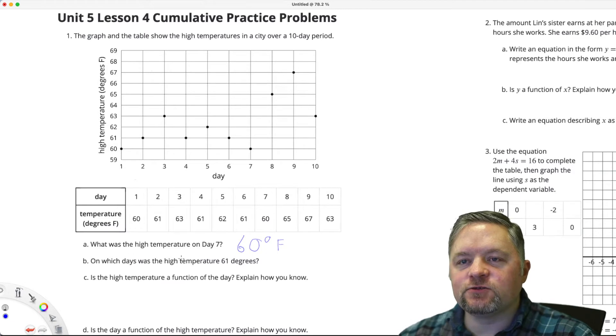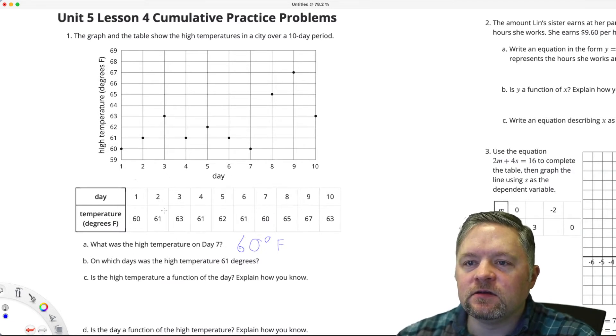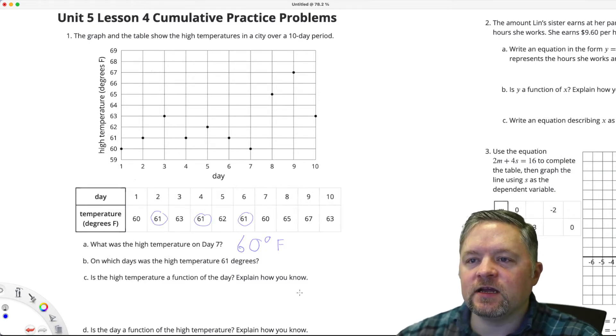On which days was the high temperature 61 degrees? Well, that's here, here, here, so day 2, 4, and 6.